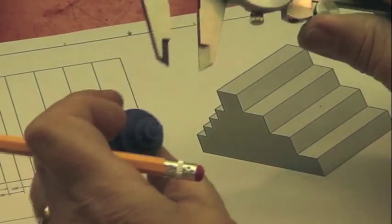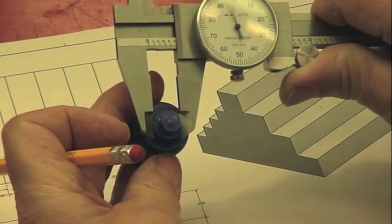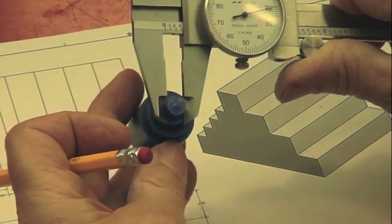There are four ways to take measurements. The first is using the main jaws to take an outside measurement. This is by far the most commonly used application.